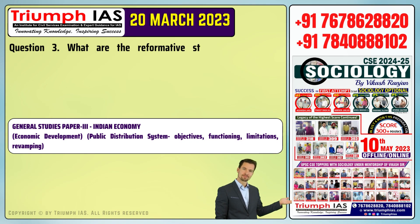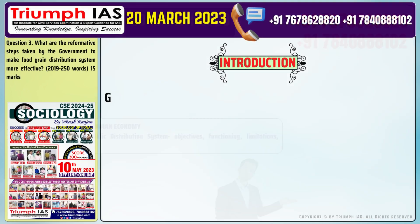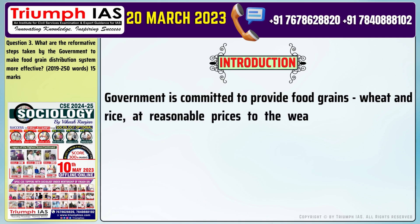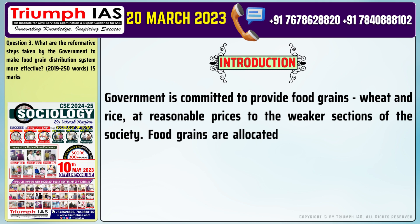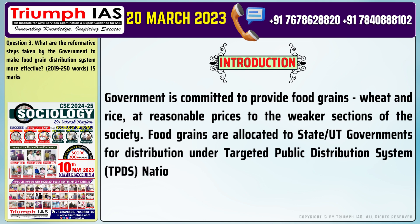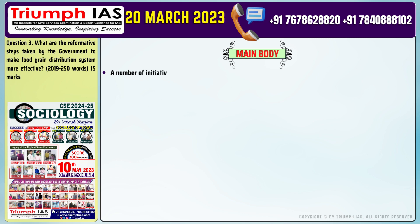Question number 3: What are the reformative steps taken by the government to make the food grain distribution system more effective? The government is committed to providing food grains — wheat and rice — at reasonable prices to the weaker sections of society. Food grains are allocated to state and UT governments for distribution under the Targeted Public Distribution System (TPDS), National Food Security Act (NFSA), and other welfare schemes.